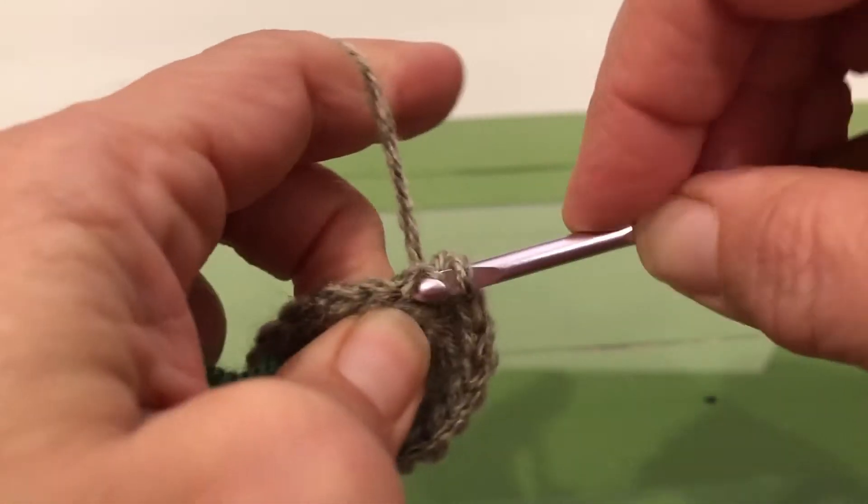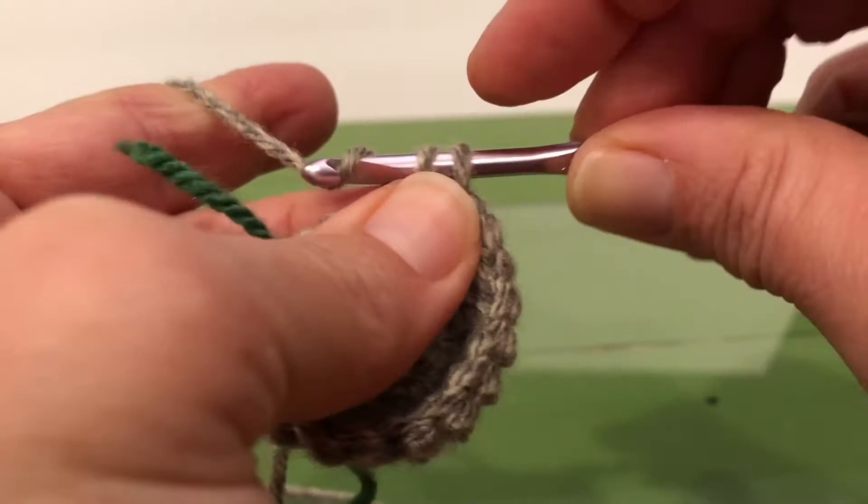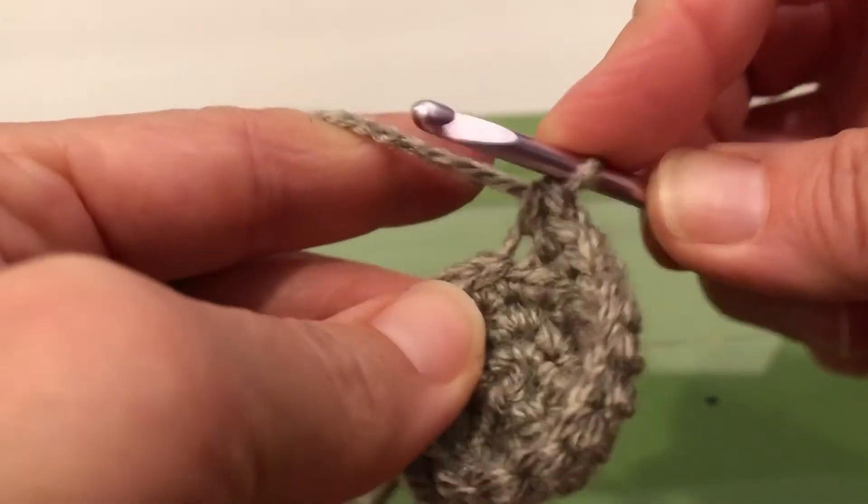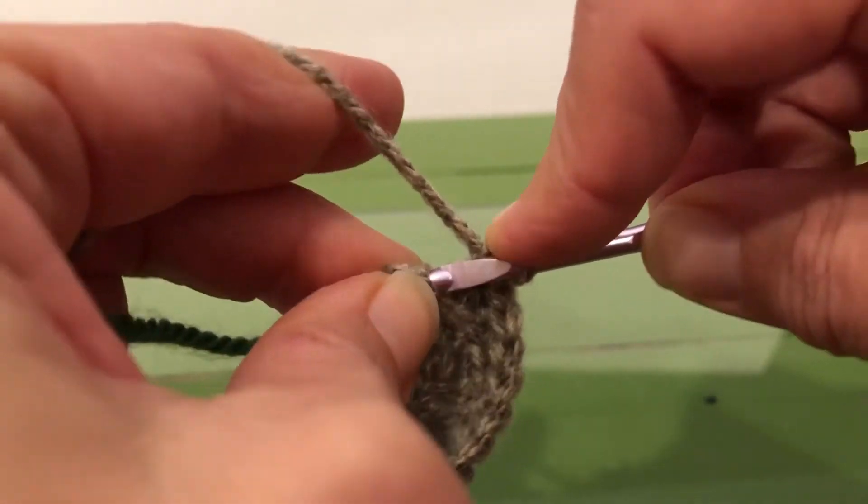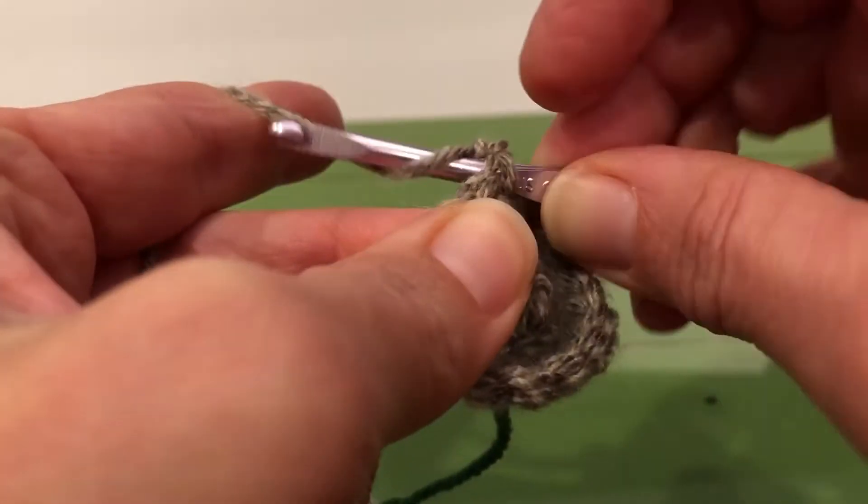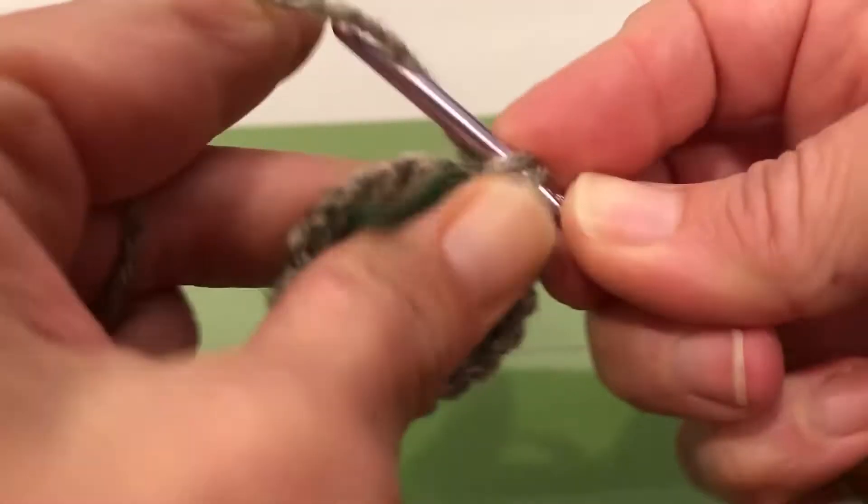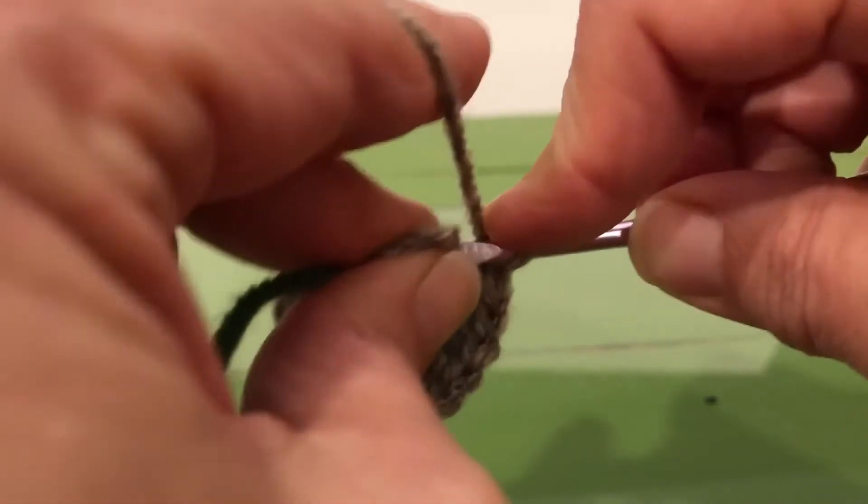Through that back, yarn over, pull through, yarn over again, and pull through the two stitches that are on the hook. There we go. Getting close. I can see our marker.